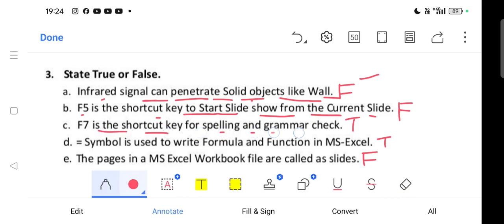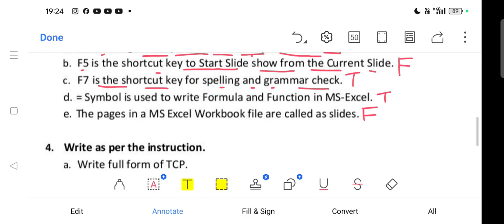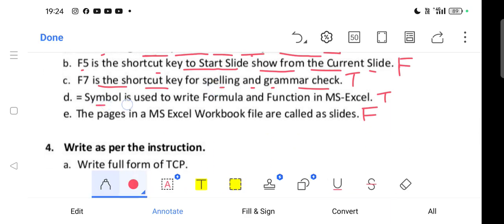Question C: F7 is the shortcut key for spelling and grammar check. Yes, this is correct - True. Question D: The equal to symbol is used to write formula and function in MS Excel. This is true.